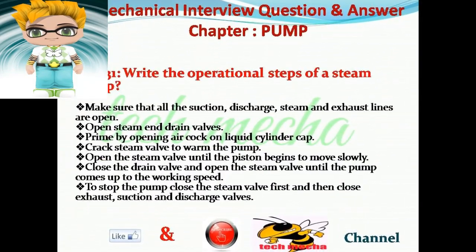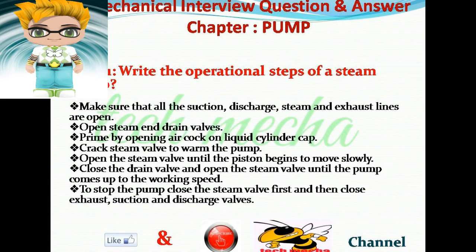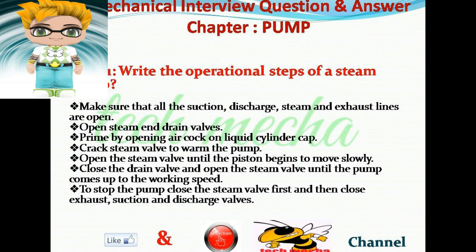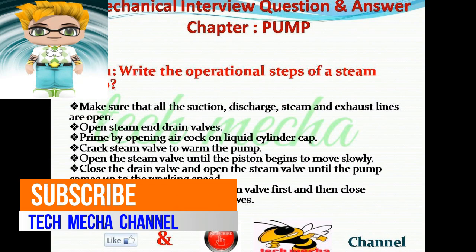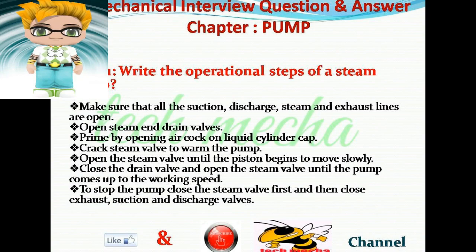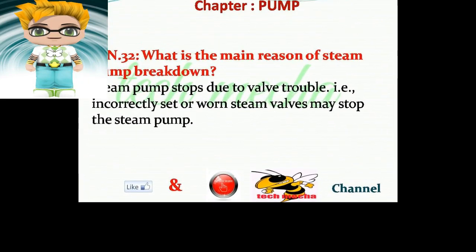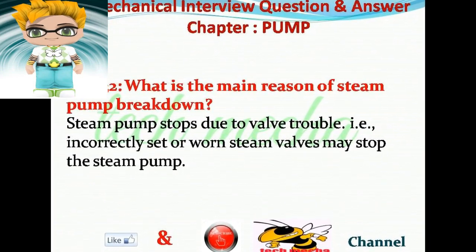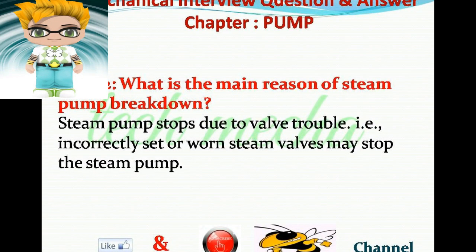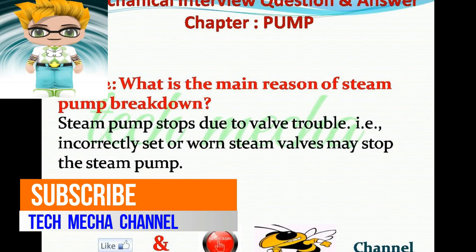Question number 31: Write the operational steps of a steam pump. Answer: Make sure all suction, discharge, steam, and exhaust lines are open. Open steam and drain valves. Prime by opening the air cock on the liquid cylinder cap. Crack the steam valve to warm the pump. Open the steam valve until the piston begins to move slowly. Close the drain valve and open the steam valve until the pump comes up to working speed. Question number 32: What is the main reason for steam pump breakdown? Answer: Steam pump stops due to valve trouble — incorrectly set or worn steam valves may stop the steam pump.